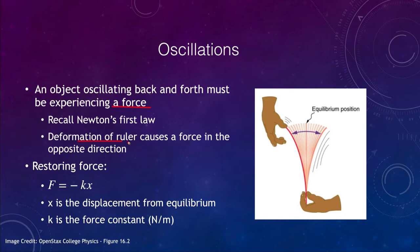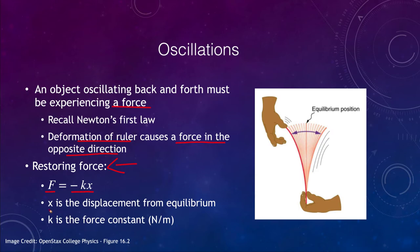That force is caused by the deformation — in this case of the ruler shown here — which causes a force in the opposite direction, and we call this a restoring force. That force is given by F equals negative k times x, the displacement. The minus sign tells us that the force is always opposite to the displacement. So if the displacement is to the right, the force is a restoring force pulling it back to the left, and if the displacement is to the left, the restoring force pulls it to the right. x is the displacement from the equilibrium, which is the central position.